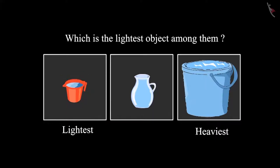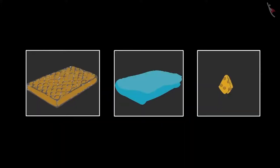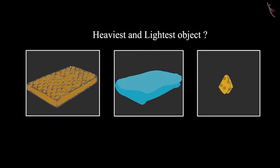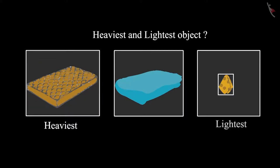Some objects are kept here: a handkerchief, a bed sheet, and a mattress. Children, can you tell me which of these three objects is the heaviest and which is the lightest? Yes, the mattress is the heaviest and the handkerchief is the lightest.